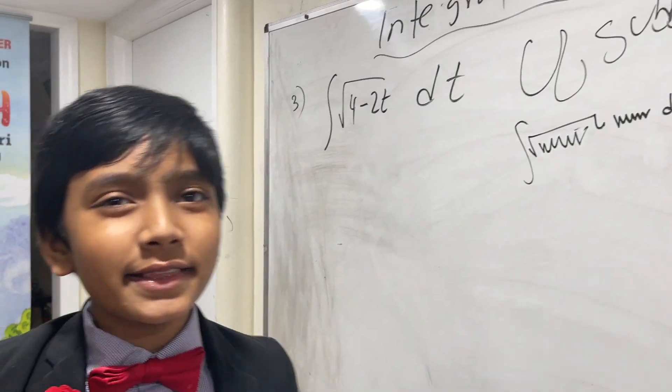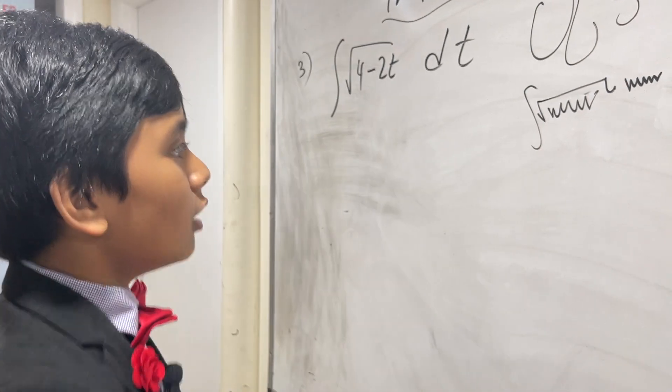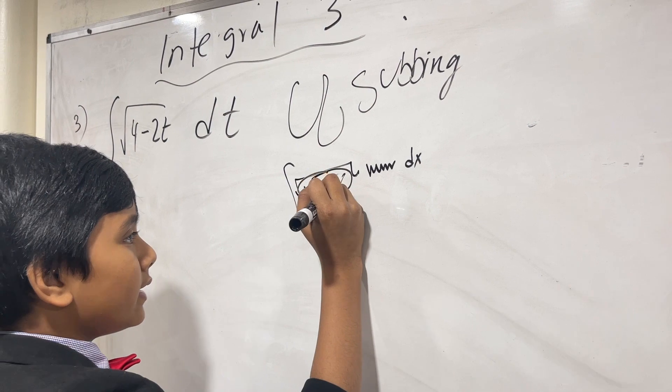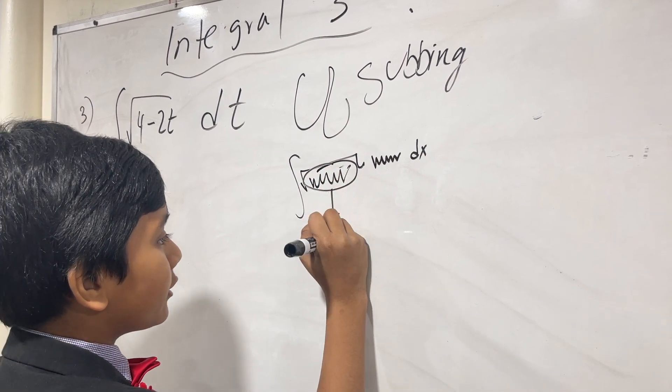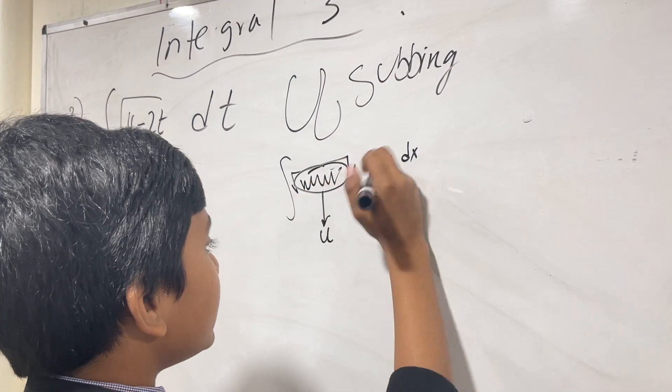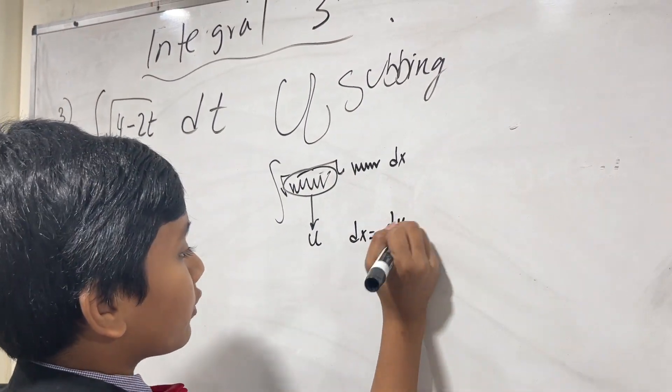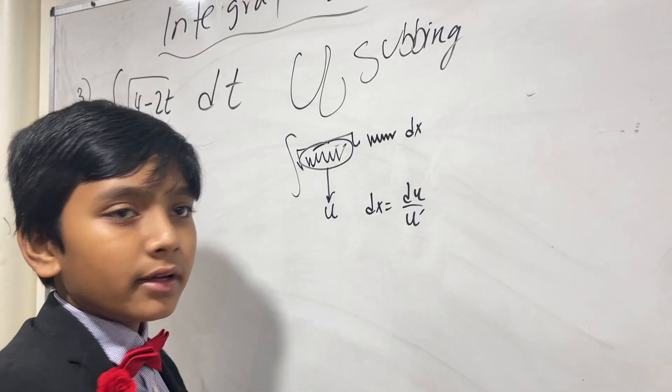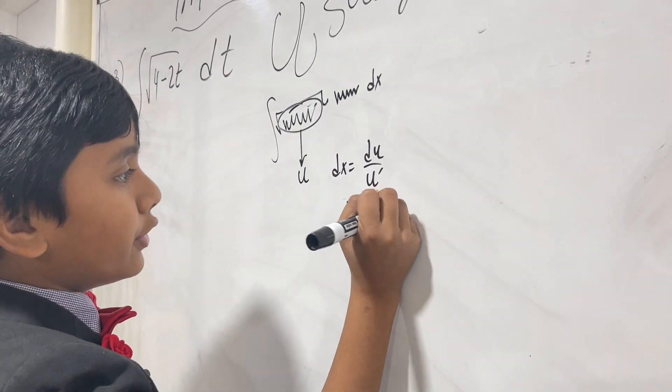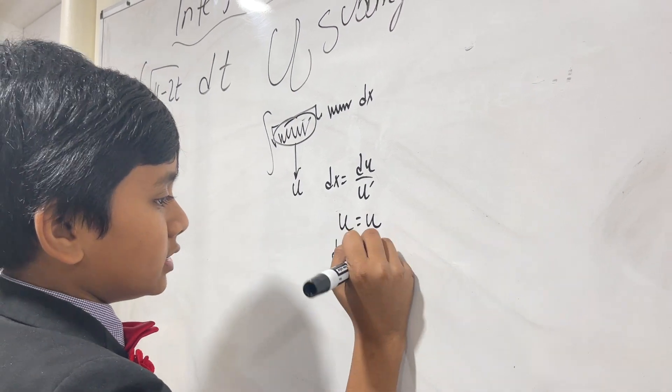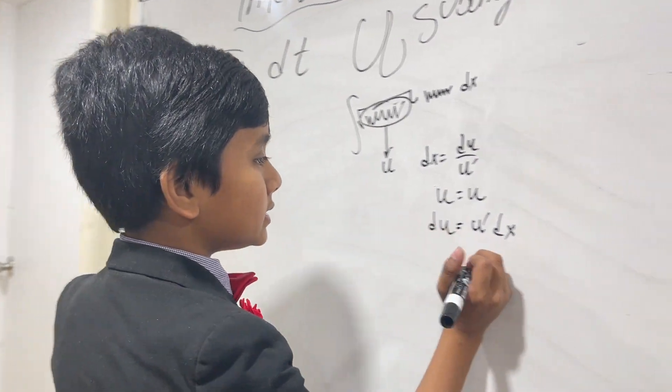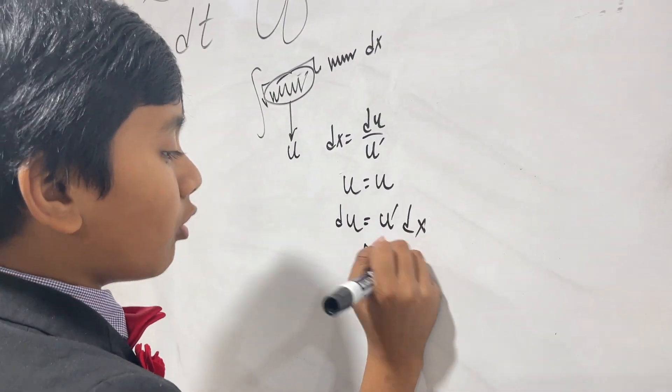Well, here's the thing-o-me-bingo. What we're going to do is take the complicated crap inside and call that u. Then dx equals du over the derivative of u. Why? Well, I'll show you. Because u is u, so du is u' dx. So that means that dx is du over u'.